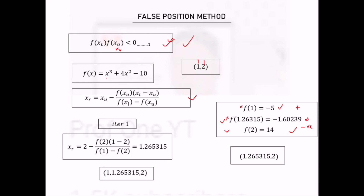Sometimes a question will ask you to find the absolute or approximation error. The values you are computing are all approximated, not true values. The percentage error formula uses the xr values: it is |xr1 − xr2| divided by xr1, multiplied by 100 to give a percentage error. This formula applies across all iterations, regardless of the method being used.